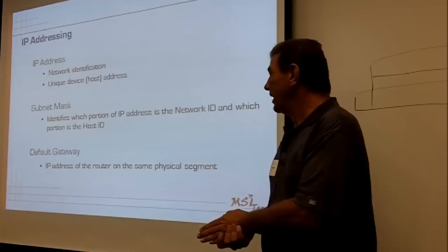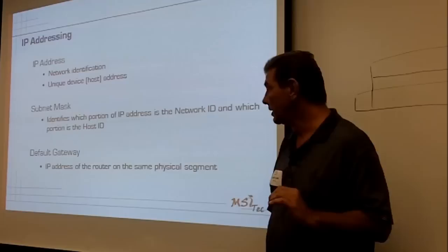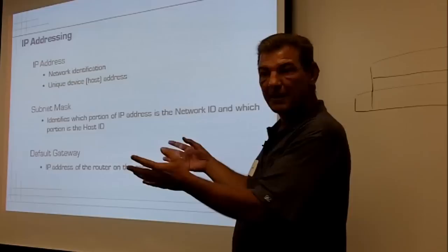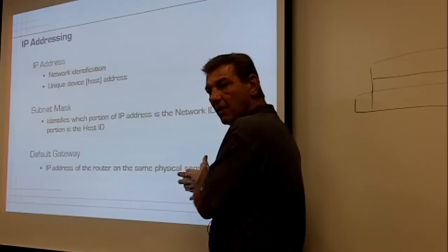It just won't work. The subnet mask tells us which part of that address is the network ID and which part is the host ID. The default gateway — if a device is looking for google.com, which is related to an IP address outside its local subnet, it'll look at its default gateway, which is usually a router, and get out to the internet that way.